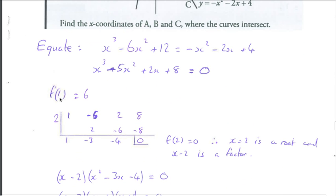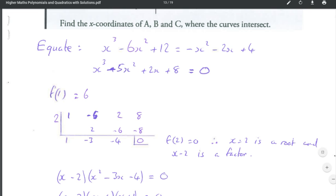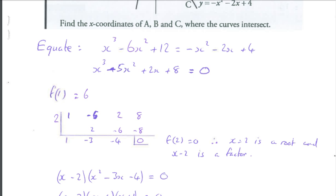Now I could use synthetic division with 1, but if I'm substituting in 1, I'm going to get 1 minus 5 plus 2 plus 8, which is 6, which is not equal to zero. So I know 1 is not going to be a root. That saved me about 20 seconds. Because you're substituting 1 in, you're essentially just looking at the coefficients rather than the x terms there.